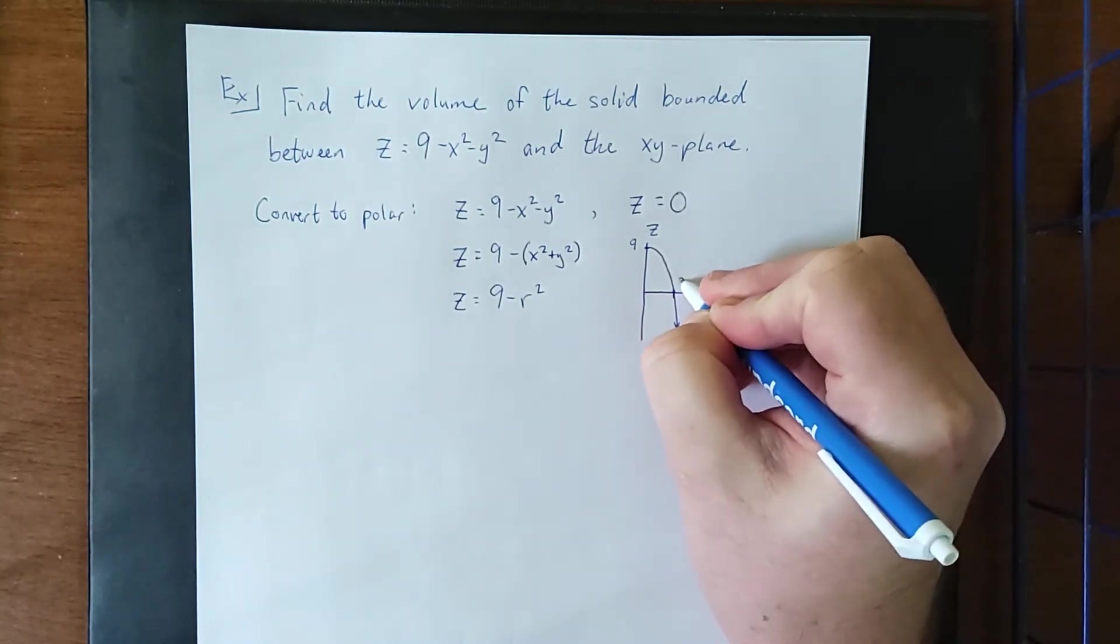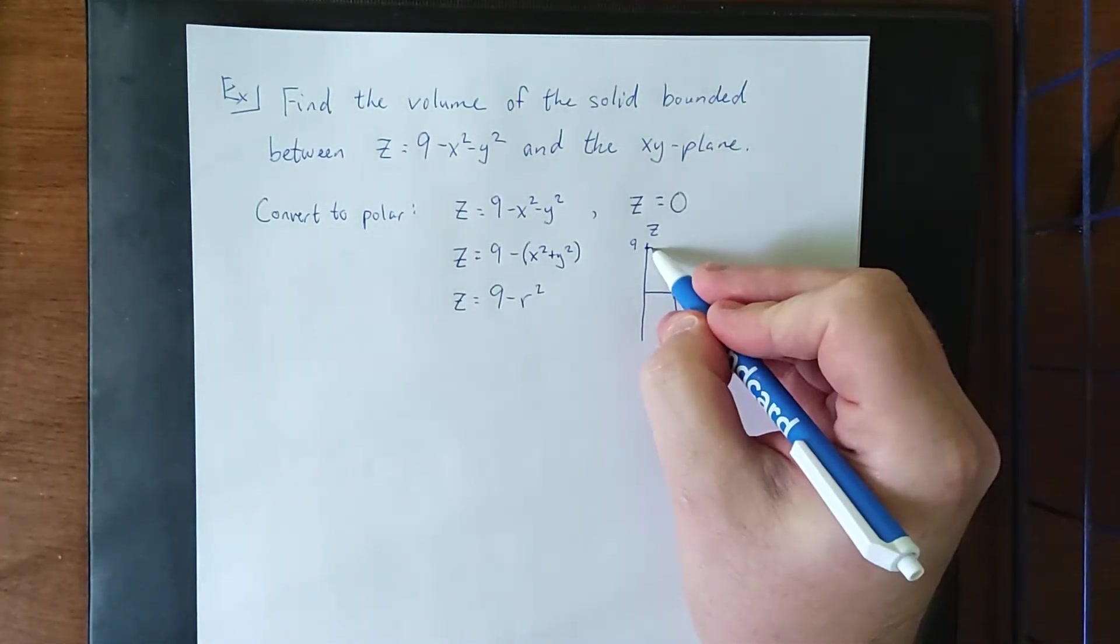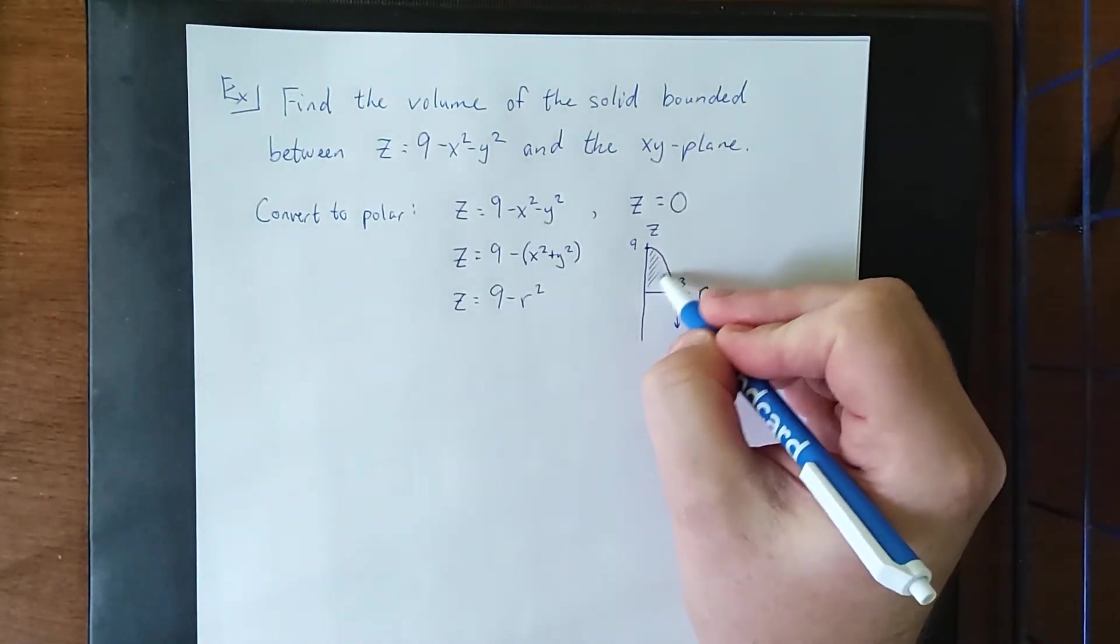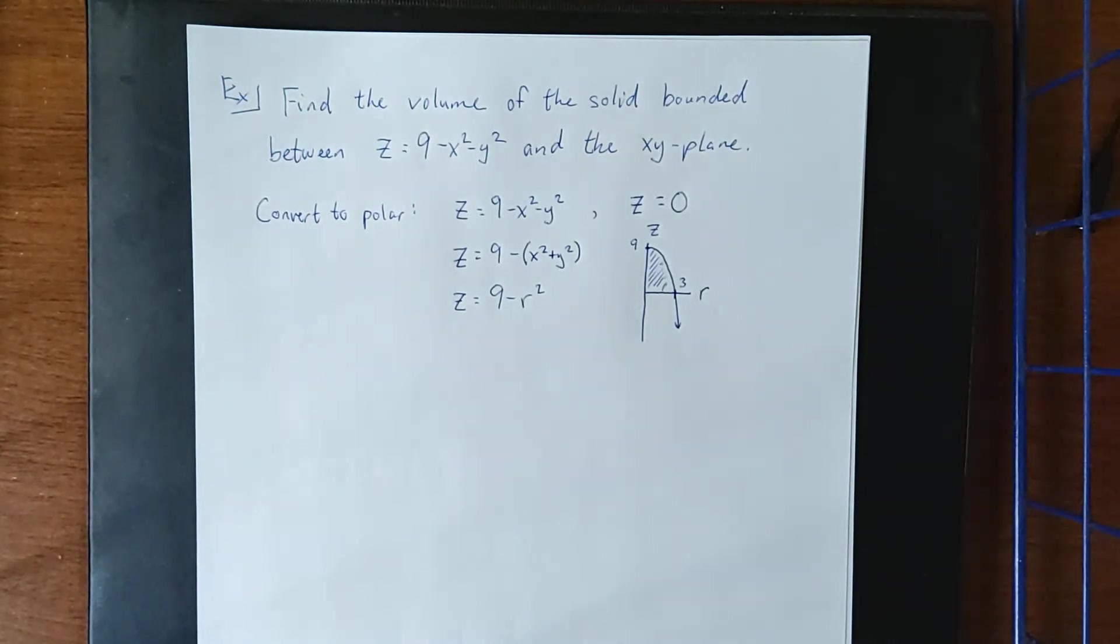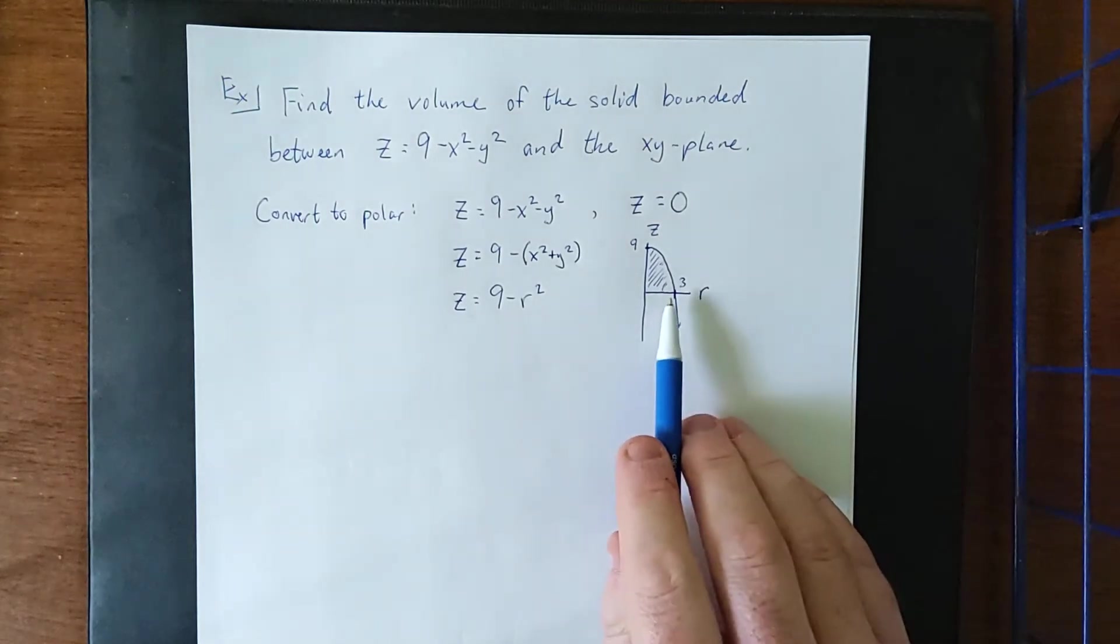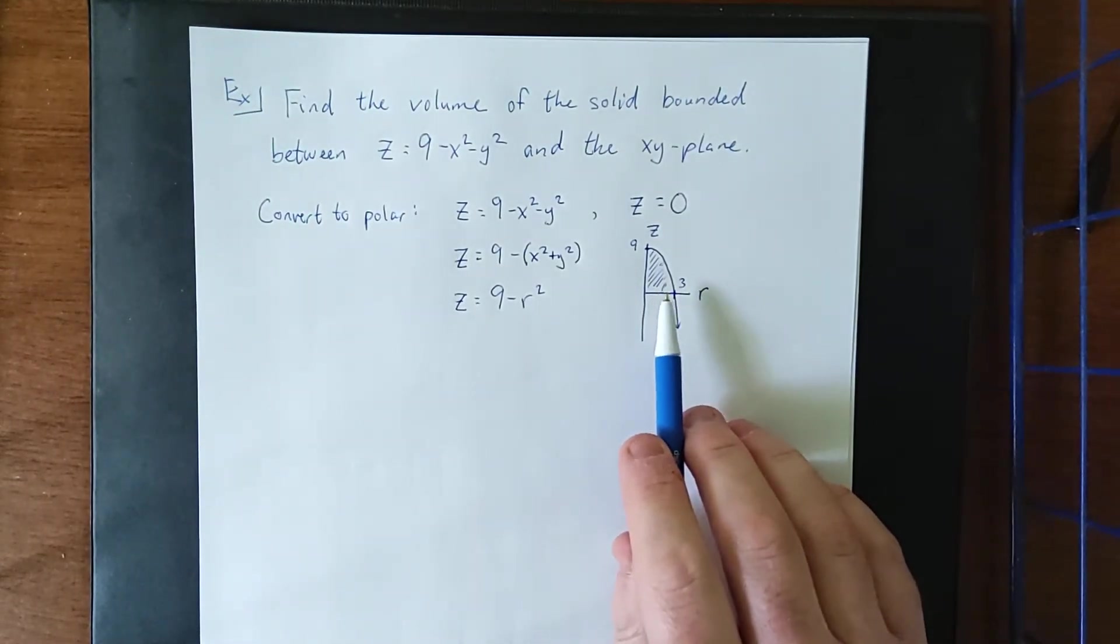This will intersect over here at an r value of 3, which we would get by setting z equal to 0. So what we're doing is we're taking this portion of a parabola, rotating this about the z axis, and that will be the corresponding solid that's created.